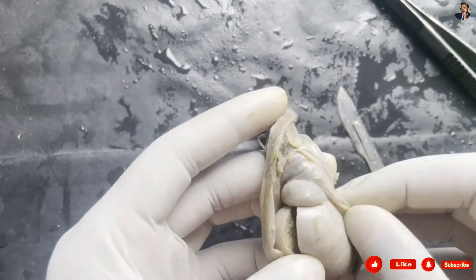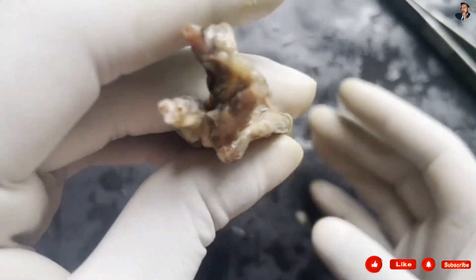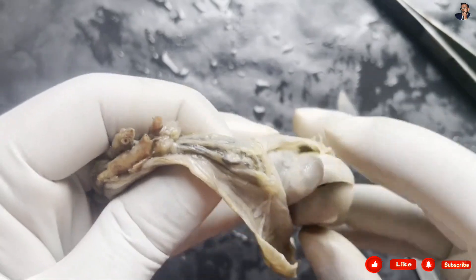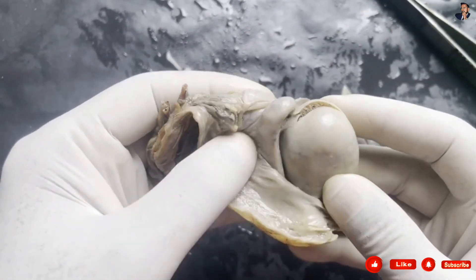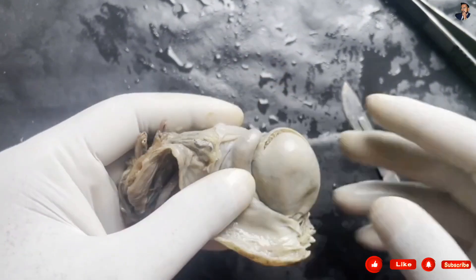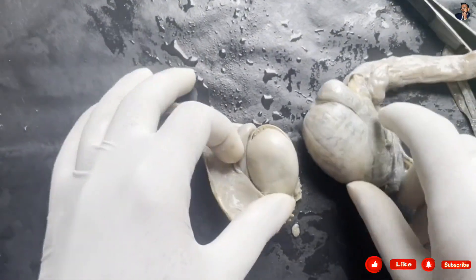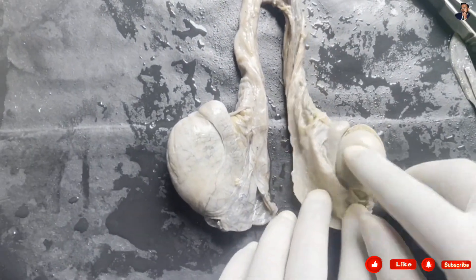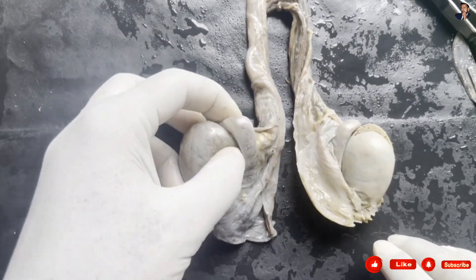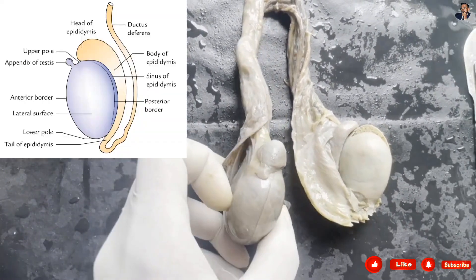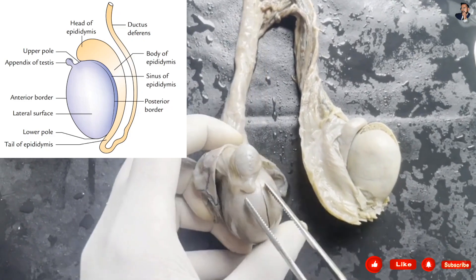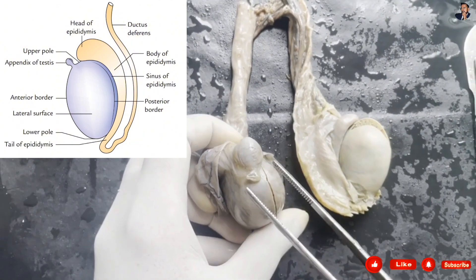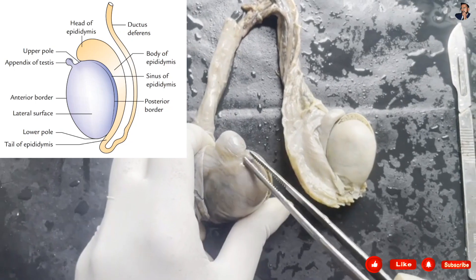Holding the testis again in anatomical position: the spermatic cord is held above, with the sinus and epididymis visible near the posterior border. Comparing the right and left testis — when the sinus faces the lateral side in the right hand, that is the right testis; the other is the left testis. The appendix of the testis is also visible, which is formed by the remnant of the Müllerian duct, also known as the paramesonephric duct.